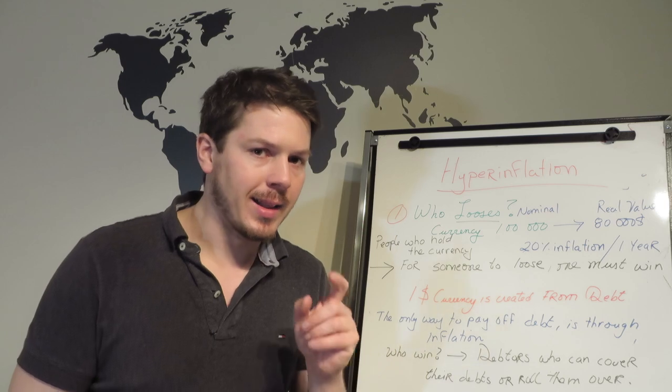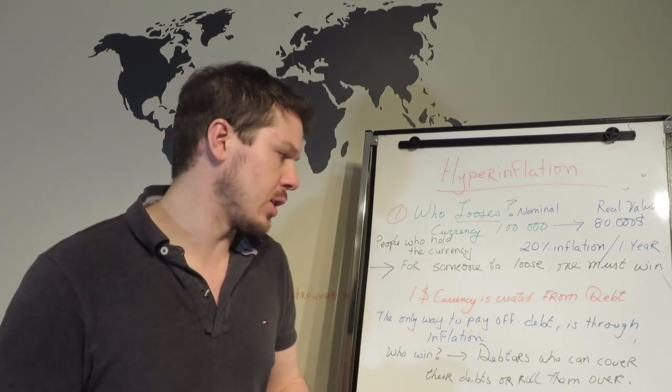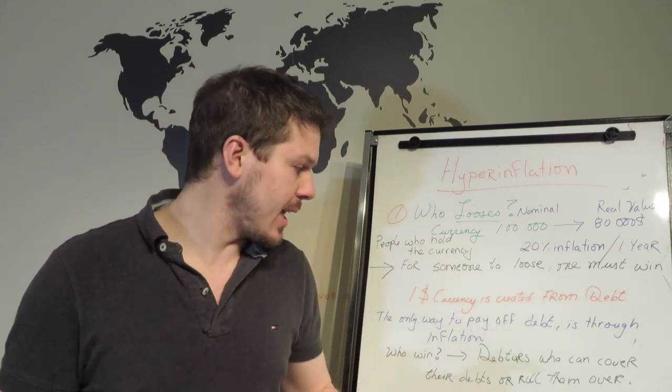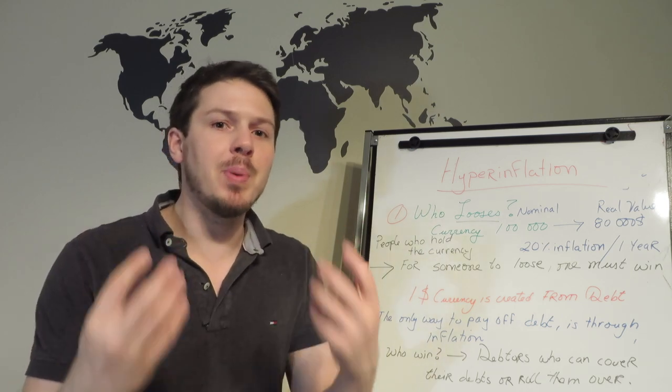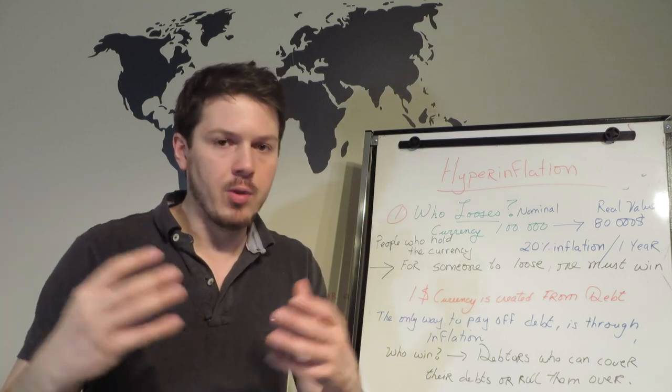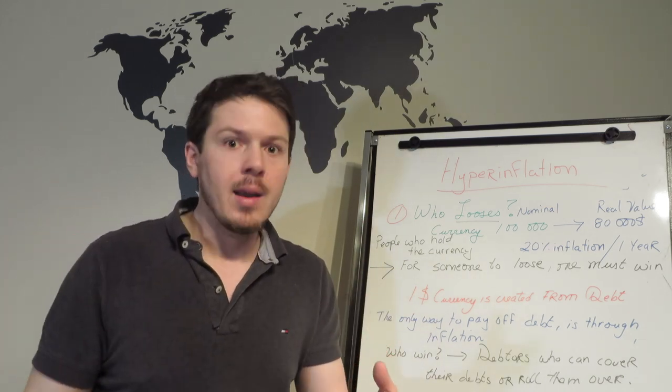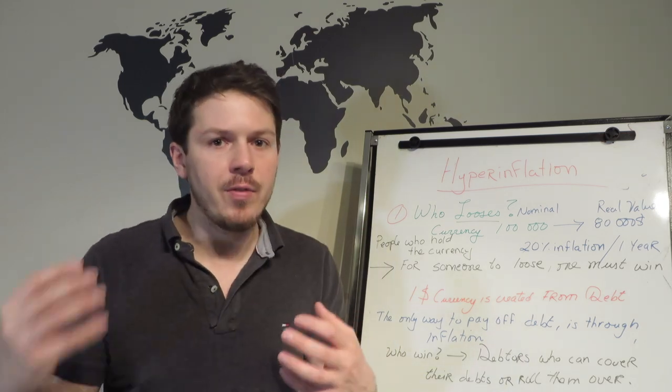So who wins? Anybody that has debt wins. But you have to remember, not all forms of debt can be paid through inflation. Debtors who can cover their debts or roll them over. Businesses usually roll their debt. What happens when it comes to the end of the loan? They just take on another bond and cover the first one, so they never physically pay off that debt.